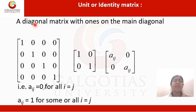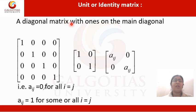Next is a unit or identity matrix. A matrix is said to be a unit or identity matrix if all entries on the main diagonal are 1. Here, all entries are 1 on the diagonal. That is, A_ij equals 0 for i not equal to j, and A_ij equals 1 for i equal to j.